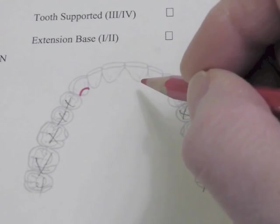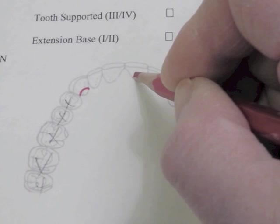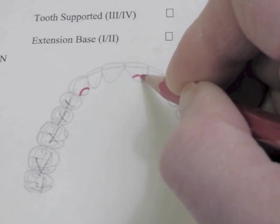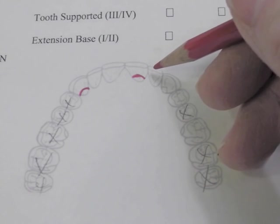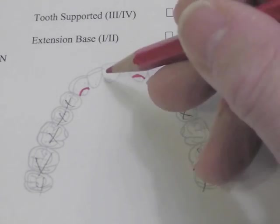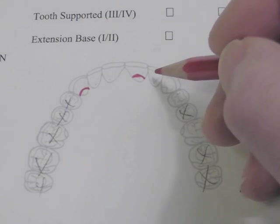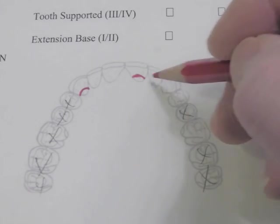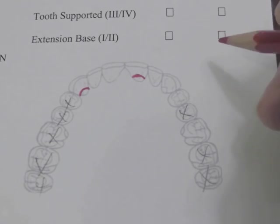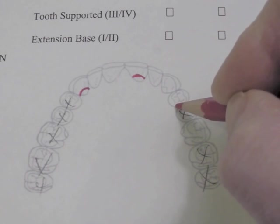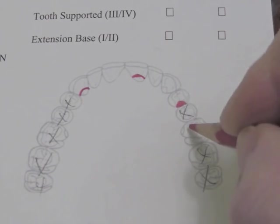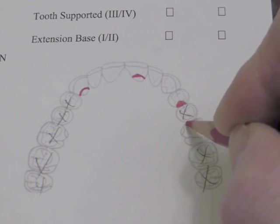We also called for an indirect retainer, which would be a cingulum rest on this central incisor. We don't put indirect retainers on lateral incisors on the maxillary, and we don't put them on any of the incisors on the mandibular. We would have a rest next to our edentulous area where these clasp assemblies are going to be located.